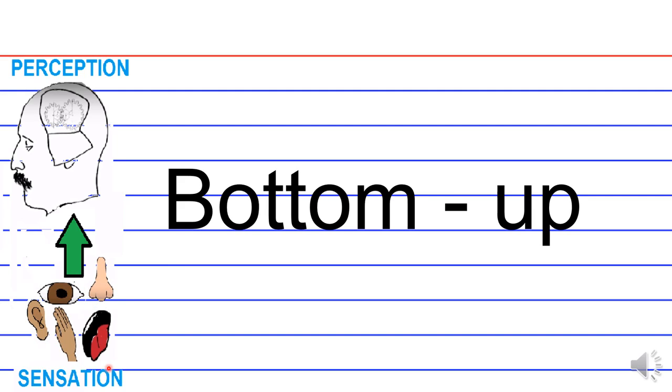At the bottom, we have sensation or the stimuli. Sensation is perceived with your nose, like olfactory sense, eyes for visuals, ears for auditory, hands for touch or sensation, the mouth for gustatory. Based on what your senses perceive, you build a perception of what's going on around you in your head.